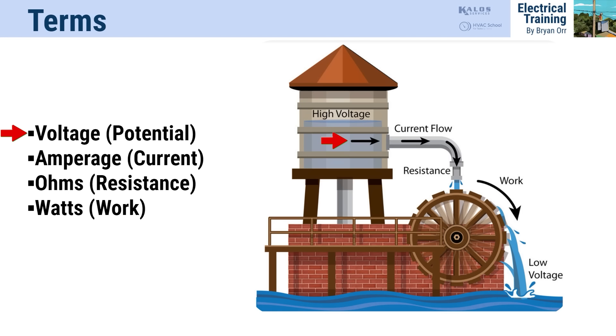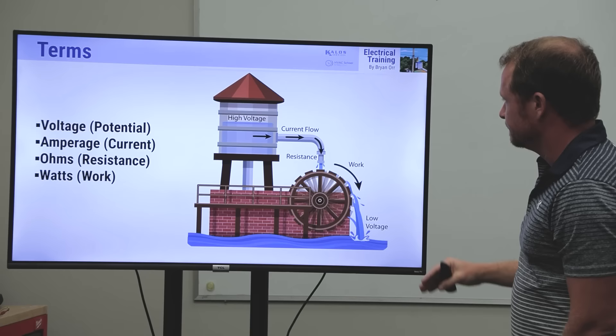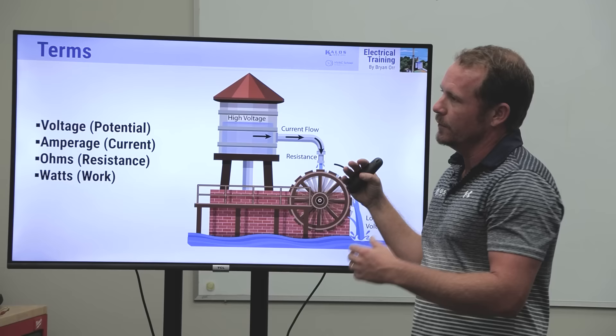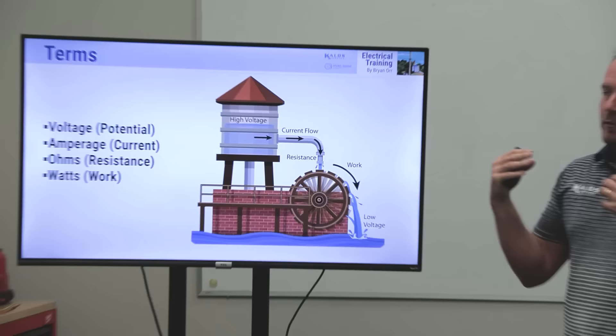We think of voltage as the force or pressure behind the electricity. If you imagine a water tower, the force comes from the difference in height between the water tower and where the water is going. That potential is represented by the distance between the water tower and the reservoir where the water ends up. The higher the water tower, the greater the head of water. We think of voltage like PSI—measuring pressure on a house.